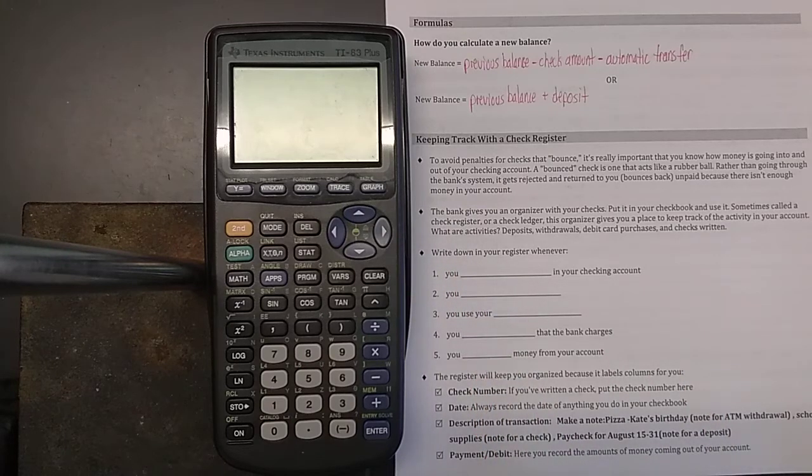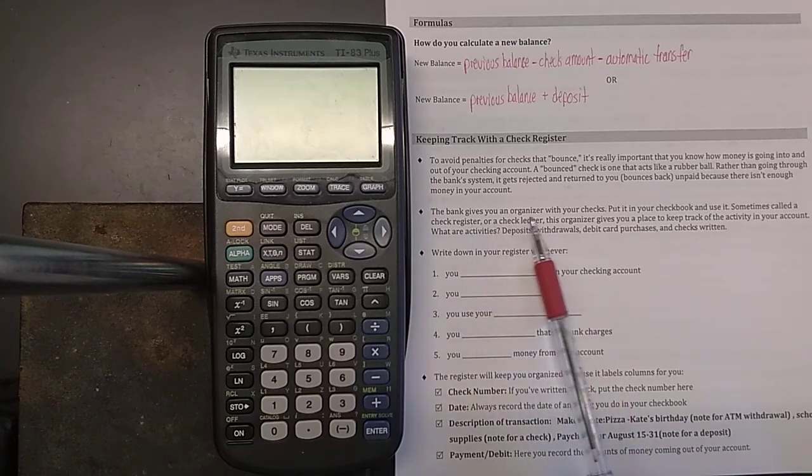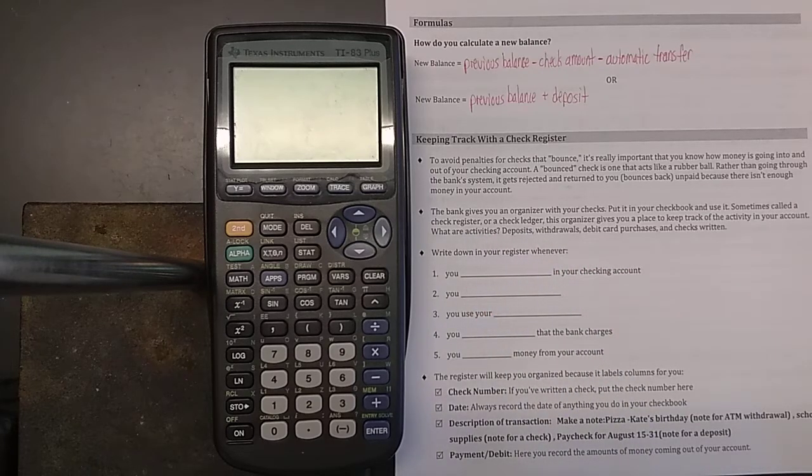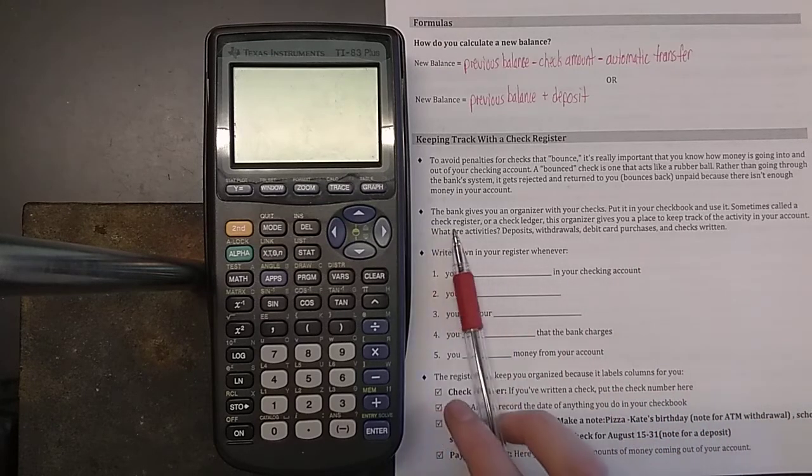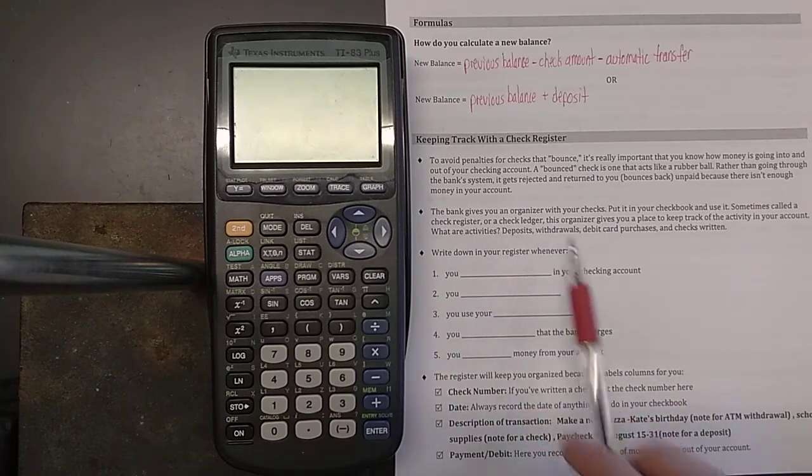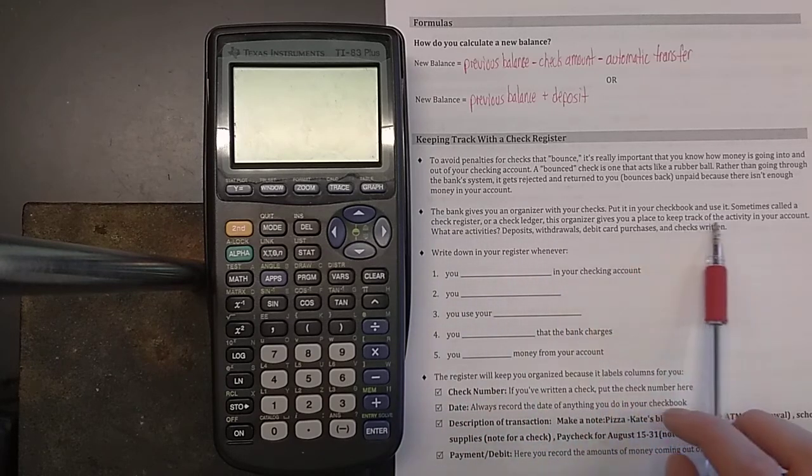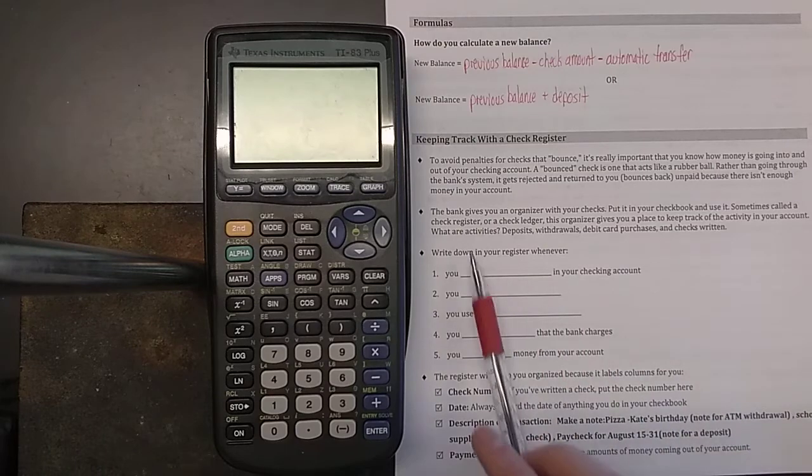In order to prevent this, in order so that you can keep track of how much money you have in an account, the bank gives you a little check organizer when they give you a stack of checks. You get the checks directly from the bank, put it in your checkbook and use it. And this is what is known as a check register. It's also known as a check ledger. It gives you a place to keep track of all the activity in your account.